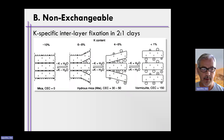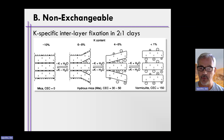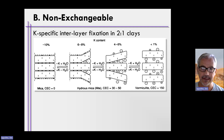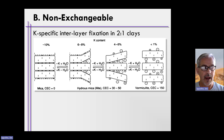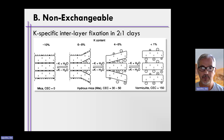We just talked about primary minerals and the weathering of primary minerals, and that potassium comes from primary minerals in most soils, unless soils are really, really weathered or they have parent material that simply didn't contain a lot of primary minerals with potassium. When those primary minerals weather and release potassium, where does that potassium end up?